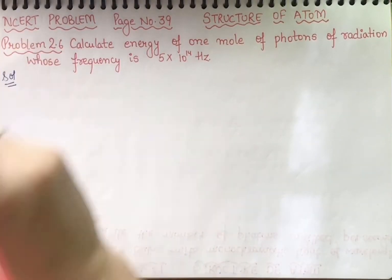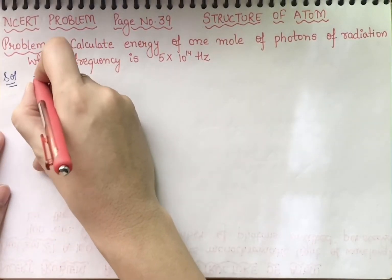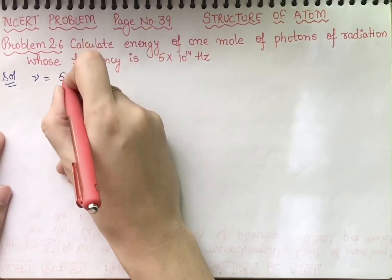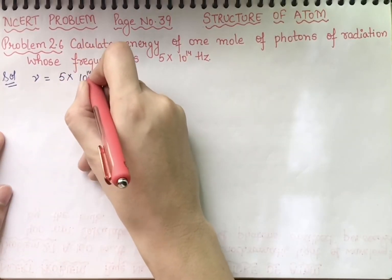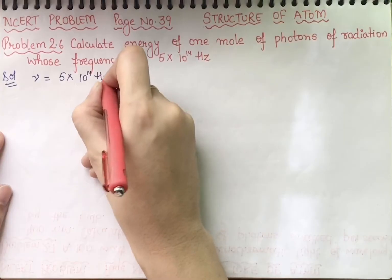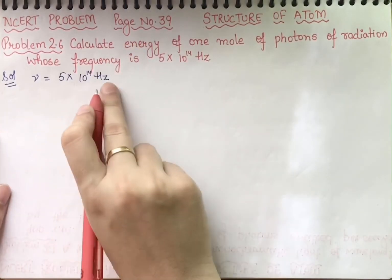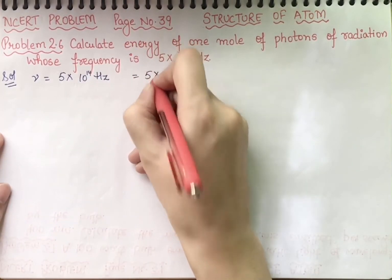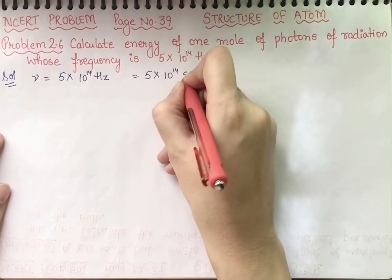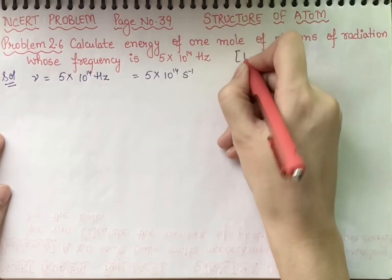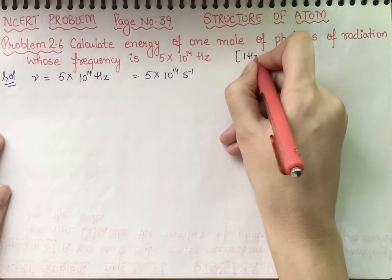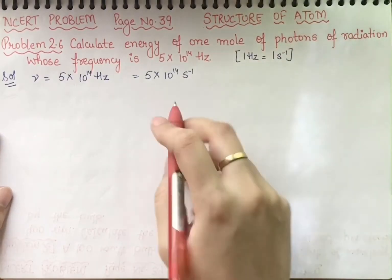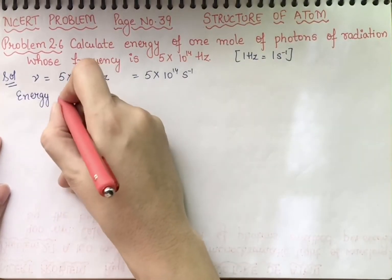First, we write the given value: frequency ν = 5×10¹⁴ Hz. We convert this to SI units: 5×10¹⁴ s⁻¹, since one hertz equals one second inverse.